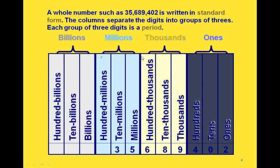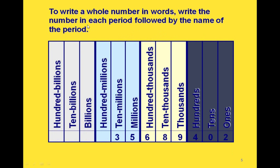Now if we write a large number with commas in between each group of three digits, we say it's written in standard form. And each group of three digits is called a period. So the first three digits is the ones period, the second three is the thousands period, the third three is the millions, the fourth three is the billions, and so on.